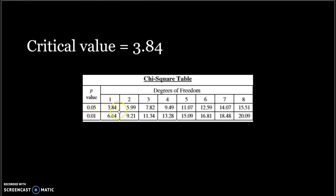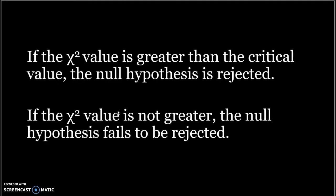To interpret our results, we compare our chi-squared value to the critical value. If the chi-squared value is greater than the critical value, the null hypothesis is rejected, and we conclude that there is a difference between the samples. If the chi-squared value is less than or equal to the critical value, then we fail to reject the null hypothesis. In this case, there is probably not a difference between our samples.